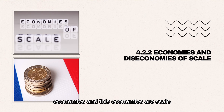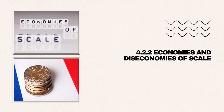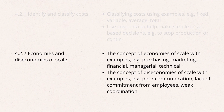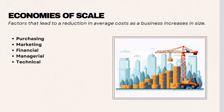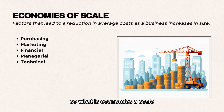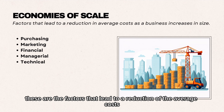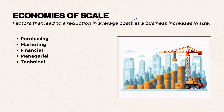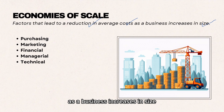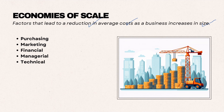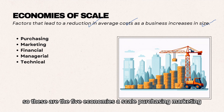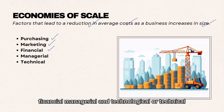Economies and diseconomies of scale. So what are economies of scale? These are the factors that lead to a reduction of the average cost as the business increases in size. The five economies of scale are: purchasing, marketing, financial, managerial, and technological or technical.